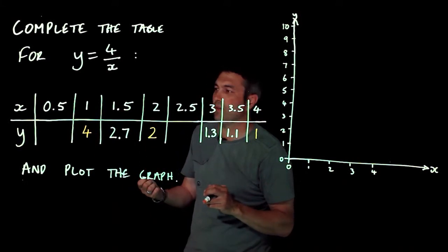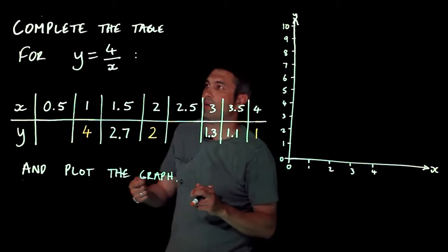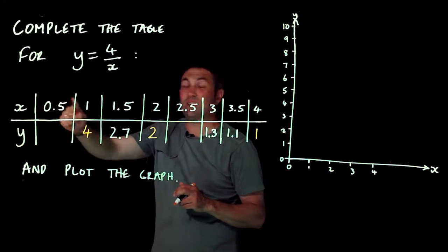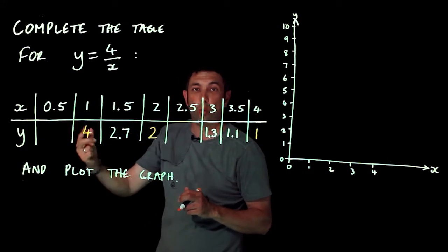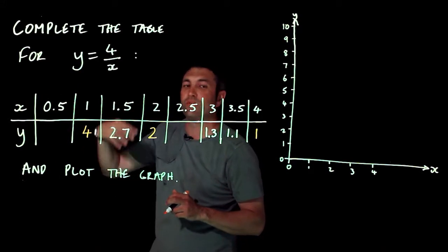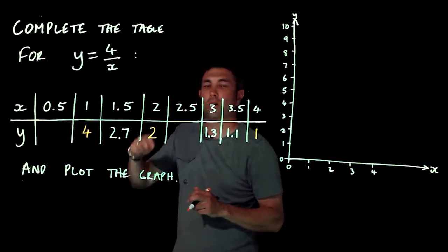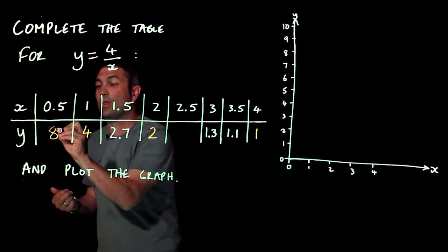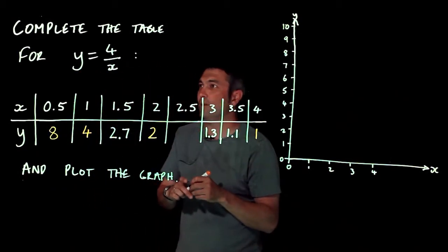Now you'll have a calculator for this so don't worry too much. Now if you've forgotten your calculator, which hopefully you haven't, 4 divided by a half is actually not too bad either because how many halves go into 4. So if I go half, 1, 1 and a half, 2, if I count up, I actually end up with 8 halves in 4.